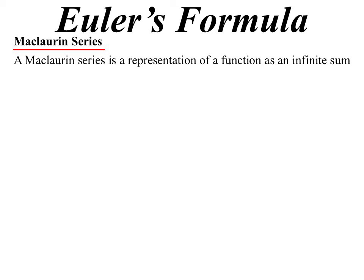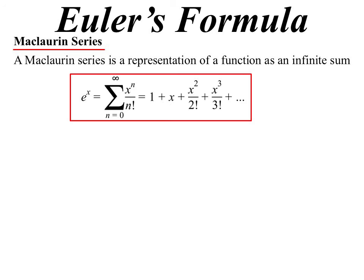You see we can turn all sorts of functions into a polynomial. Now e to the power of x can actually be written as a polynomial and here it is: 1 plus x plus x squared on 2 factorial plus x cubed on 3 factorial plus x to the 4 on 4 factorial and so on. If we were to go all the way and sum it to infinity it would fit exactly the same.